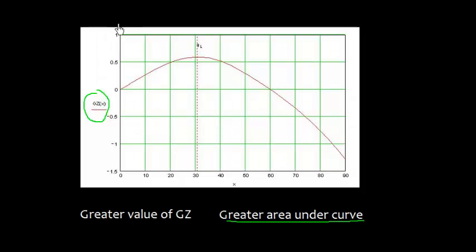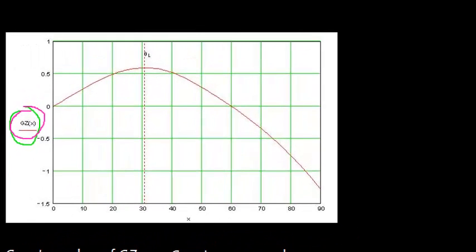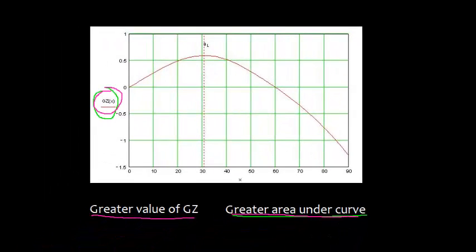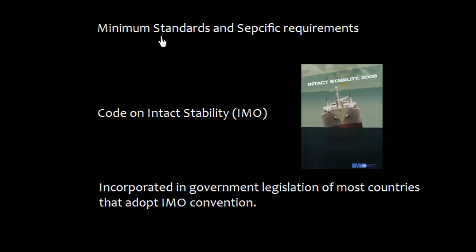So this is an example. Here we are having this GZ curve and greater the value of GZ, greater area is under the curve. Minimum standards and specific requirements regarding the GZ curve and the area under the curves are given in Code on Intact Stability. This is by IMO and these requirements are incorporated in government legislation of most countries that has adopted IMO convention.